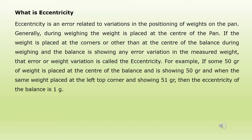Generally during weighing, the weight is placed at the center of the pan. If the weight is placed at the corners or anywhere other than the center and the balance shows any variation in the measured weight, that error is called eccentricity. For example, if 50 grams placed at the center shows 50 grams, but the same weight at the left top corner shows 51 grams, then the eccentricity of the balance is 1 gram.